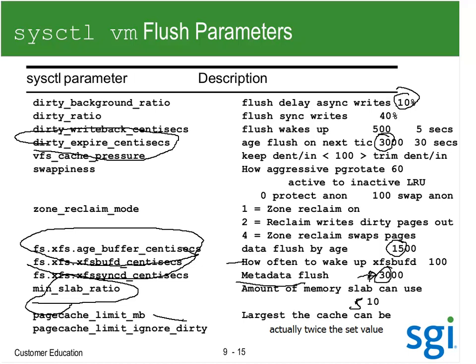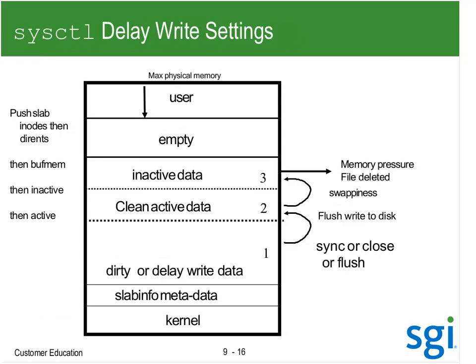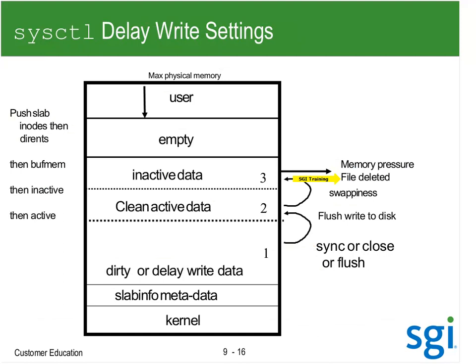I don't want the cache to get too big and I don't want the dirty to get too big. When I run out of memory, we're going to push the slab - inodes first, then directories. We were seeing that early in the week; I caught that DD command with get delays, saw it in the trim wait, went to crash, and saw it was trimming inodes. After that it will trim buff mem, then trim all the inactive, then trim the active, and then swap. When I'm trimming, I'm going to have the inactive thrown away first. A sync, close, or flush moves data from dirty to clean. Swappiness says how quickly we move it from clean to inactive, and when we have a trim or the file is deleted it will be removed from cache.